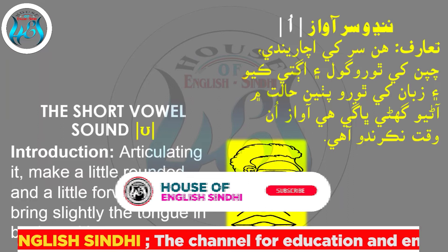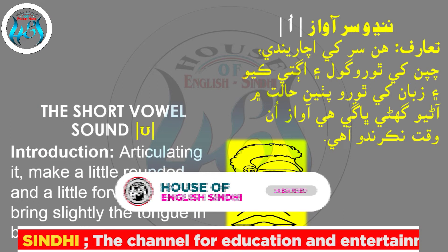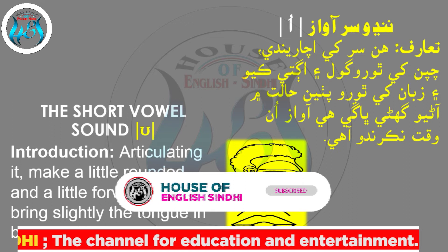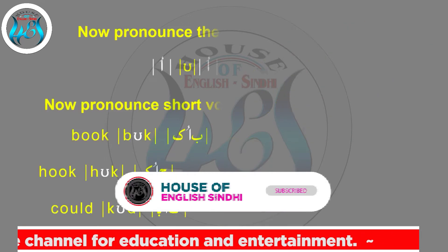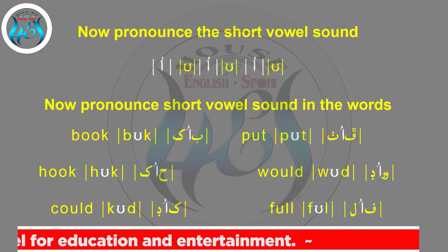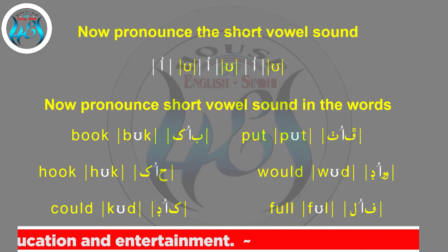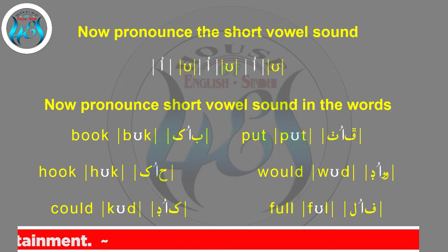The short vowel sound /ʊ/: articulating it, make a little rounded and a little forward lips and bring the tongue slightly into back position. Now pronounce the short vowel sound. Now pronounce the short vowel sound in the words: Book, Put.